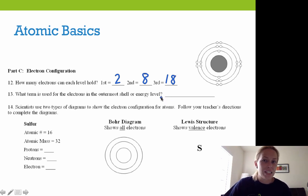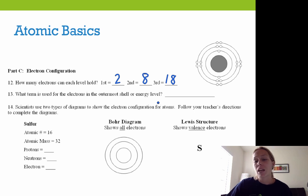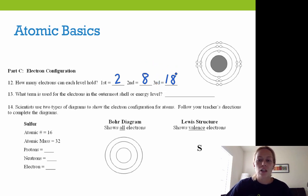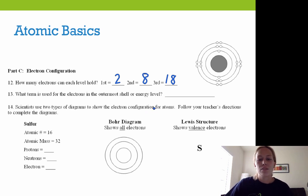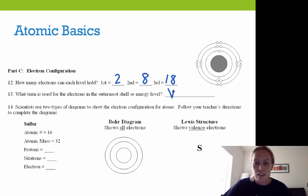Just because an energy level can hold up to 18 electrons doesn't mean it needs to hold 18. Just like a five-gallon bucket can hold up to five gallons but can also hold two or four gallons — so the third energy level doesn't necessarily always have 18 electrons in it. The term for electrons found in the outermost shell or outermost energy level is valence electrons. Those electrons are referred to as valence electrons.